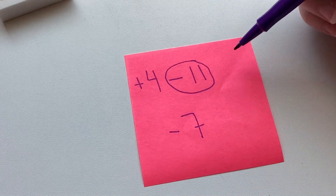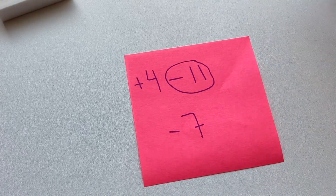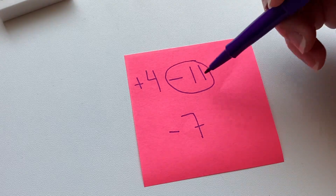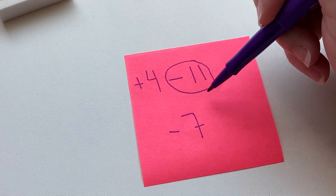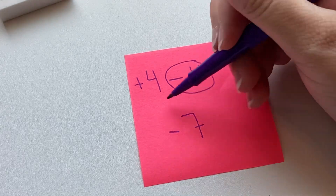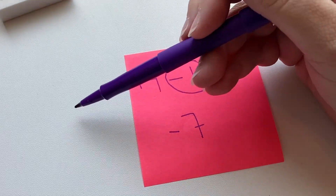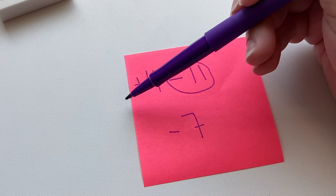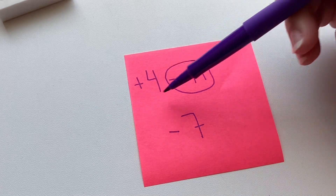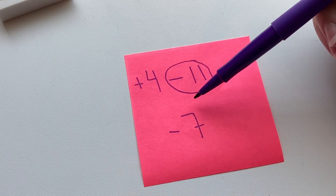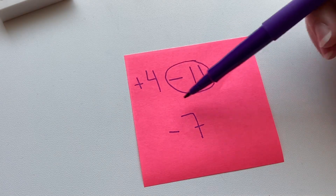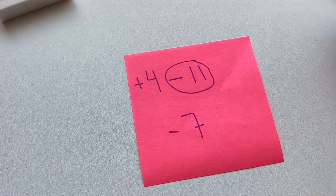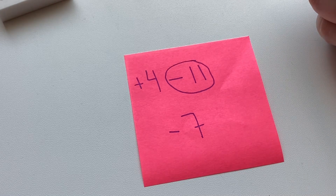And if you think about that, it makes sense. If you go on a number line and you go 11 to the left, and then you go 4 to the right, you haven't gotten back to 0. You're still in the negatives, so it makes sense that it would be negative 7.